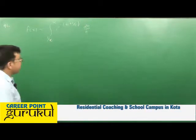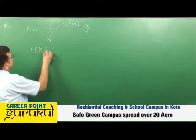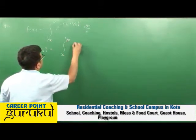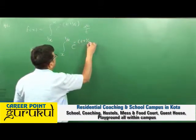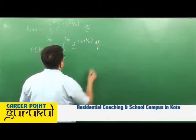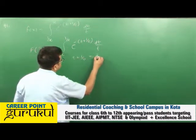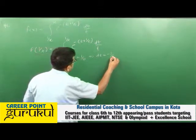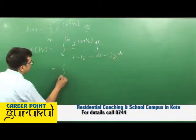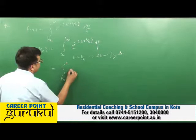Now we'll find f(1/x). f(1/x) equals the integral from x to 1/x of e^(-(t + 1/t)) · dt/t. We substitute t = 1/u, which implies dt = -1/u² du. The limits transform accordingly.